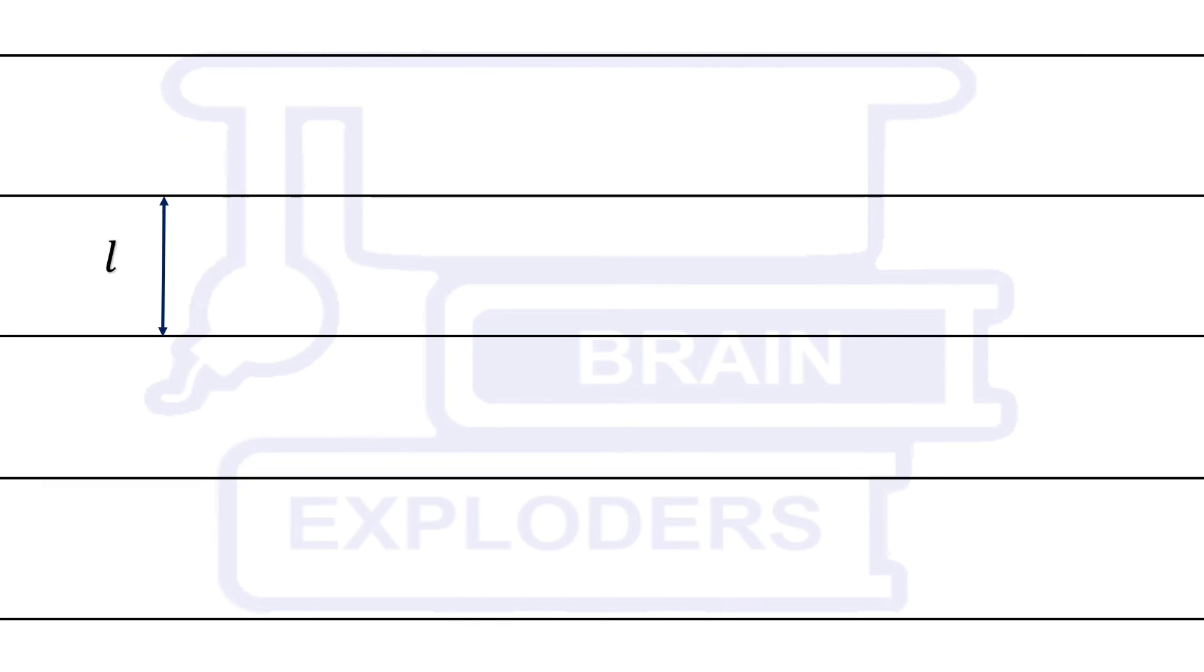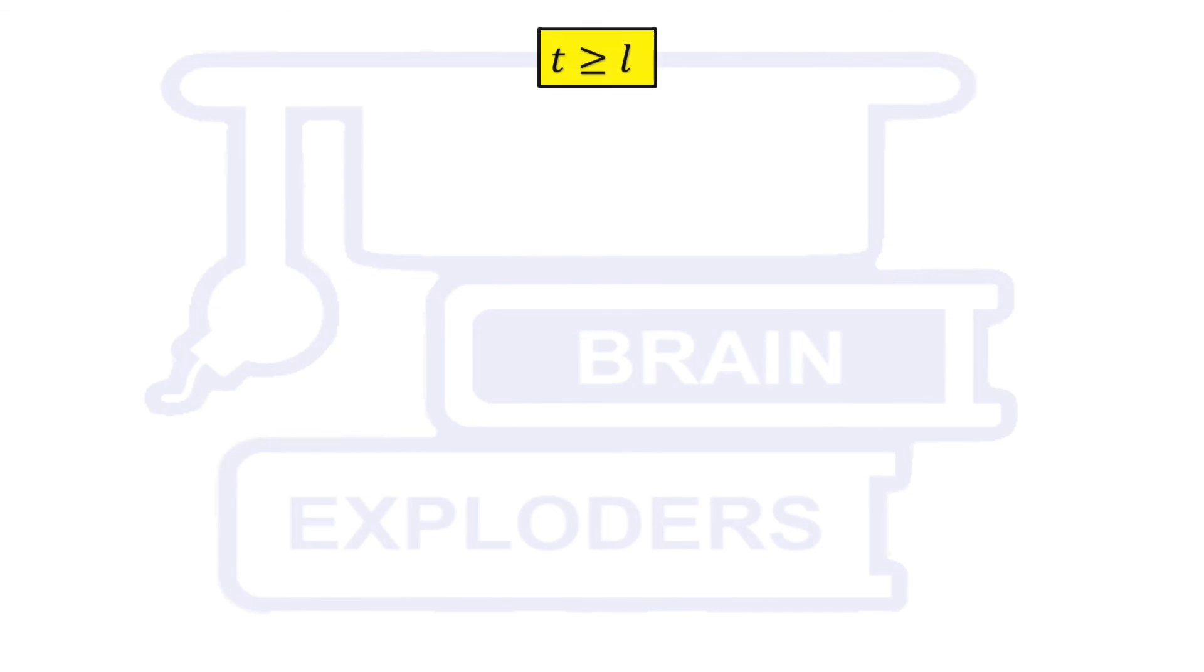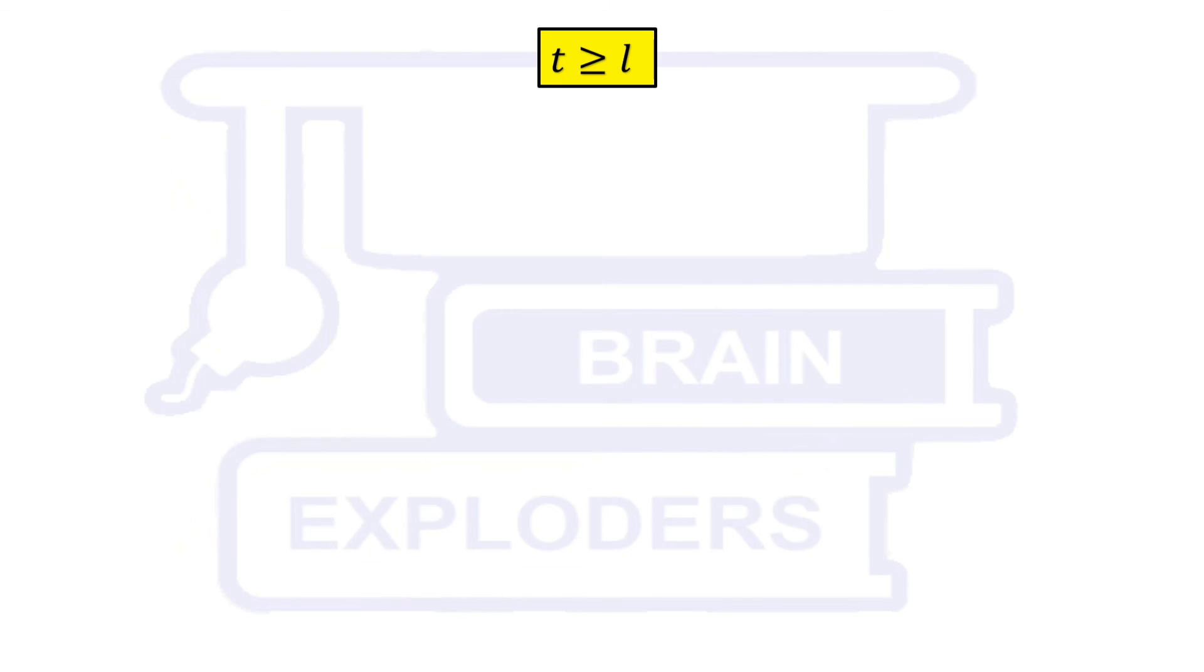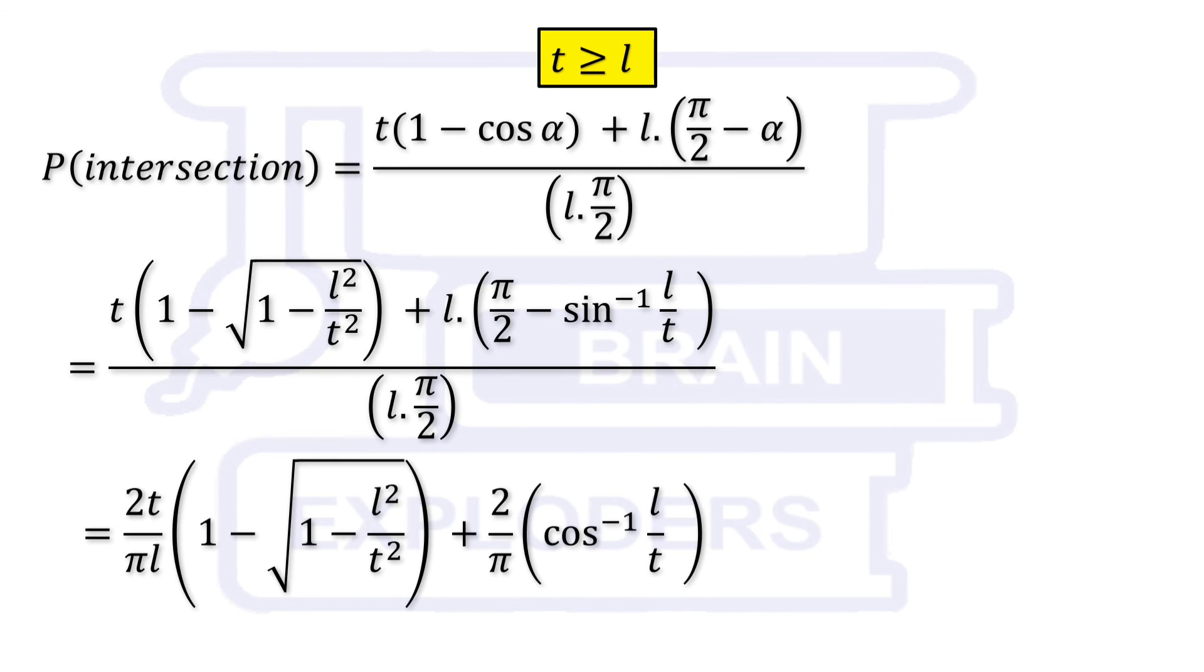If t is greater than l, then for smaller values of theta, needle does not intersect but after a particular value alpha, needle certainly intersects. Sine of this angle is l over t. In the case of longer needle also, we have to make the same graph and after alpha, length of favorable region is l at every point. Rest of the process is same. Required probability is equal to blue area over total area. On calculation, we find it equals to 2t over pi l times 1 minus root 1 minus l square over t square plus 2 over pi times cos inverse l over t.